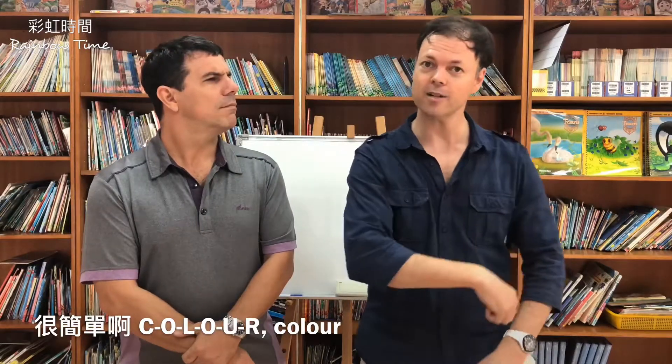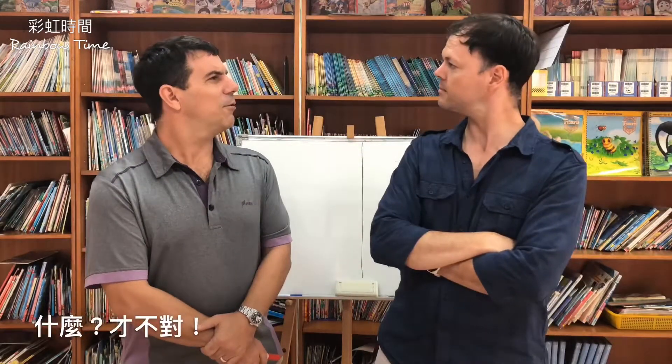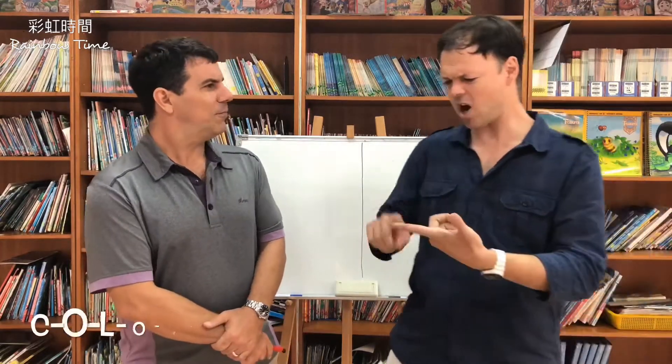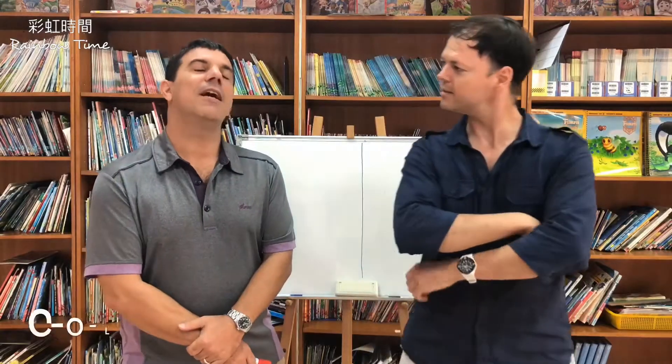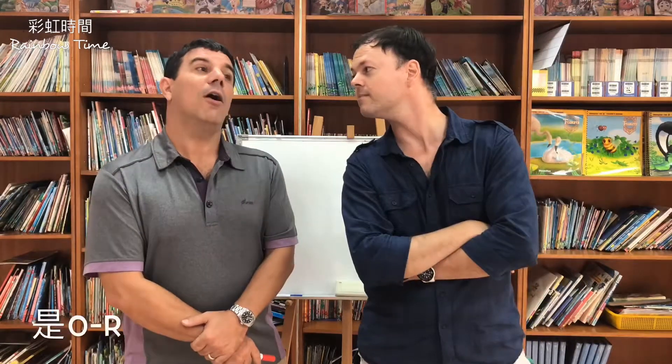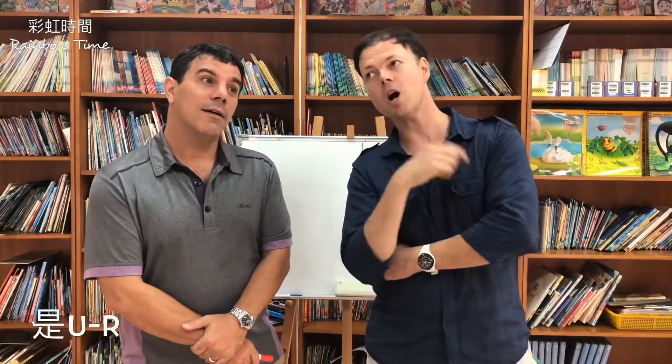Hey, how do you spell the word color? That's easy. C-O-L-O-U-R. Color? That's not right. Color: C-O-L-O-R. Color: C-O-L-O-U-R. C-O-L-O-R. U-R. O-R. Oh my goodness. Who's right?